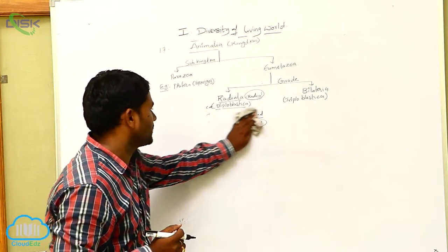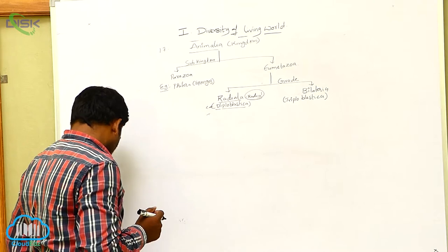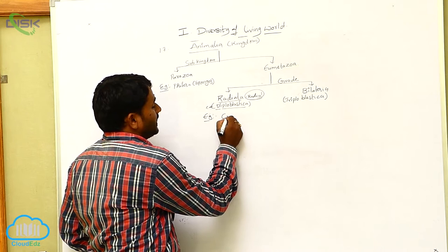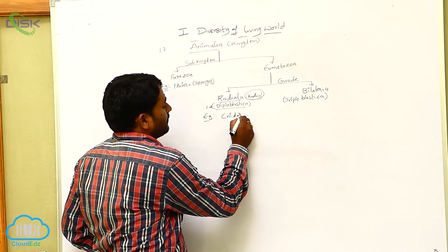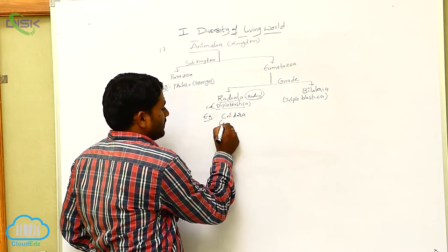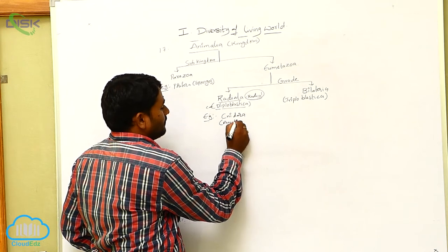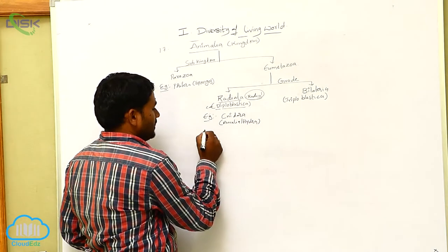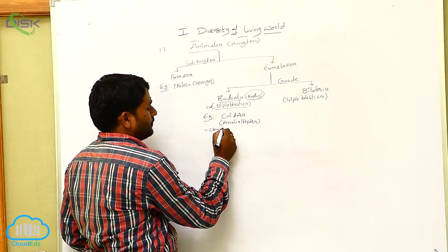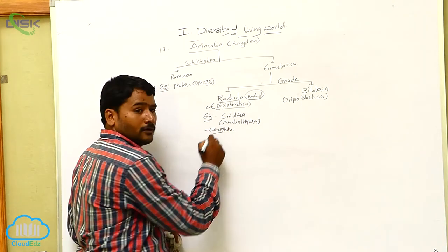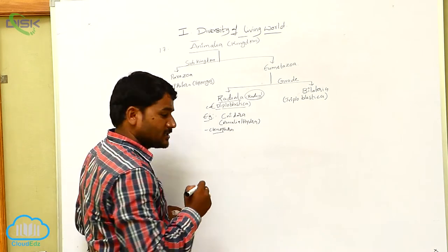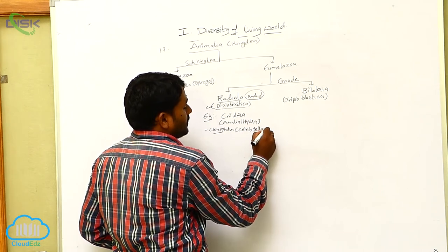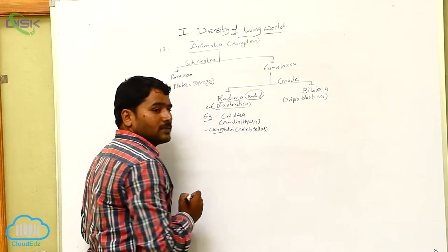Examples of Radiata: Phylum Cnidaria, for example Aurelia and Hydra. Next is Phylum Ctenophora, which includes comb jellies.